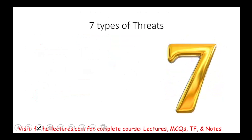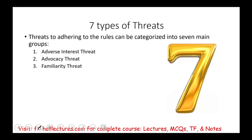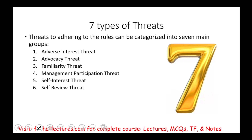Let's go ahead and talk about the seven threats and list them. These are threats to adhering to the rules, and they can be categorized into seven main categories: one, adverse interest threat; two, advocacy threat; three, familiarity threat; four, management participation threat; five, self-interest threat; six, self-review threat; and seven, undue influence threat.